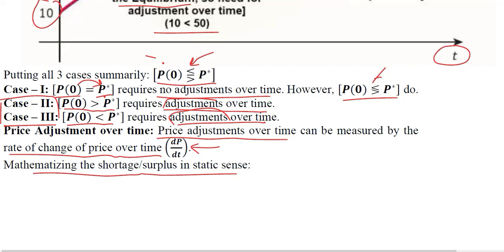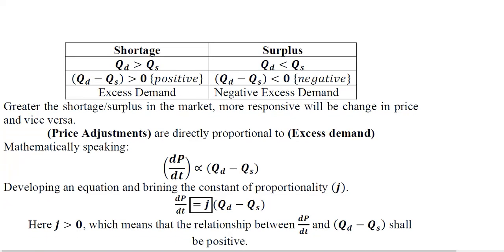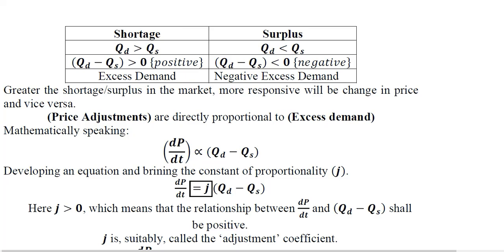In static sense, we know about shortage and surplus. If we draw a simple diagram with demand and supply curves, there is an equilibrium price and equilibrium output. Shortage and surplus are adjusted accordingly, assuming price flexibility and possibility of adjustment, so the price can change and move toward the equilibrium point. Recalling this basic concept of static analysis, shortage and surplus are represented in mathematical equations.